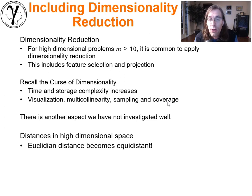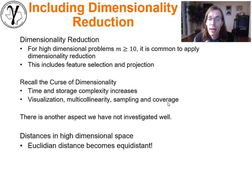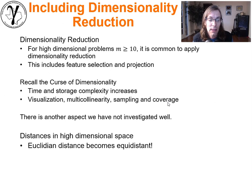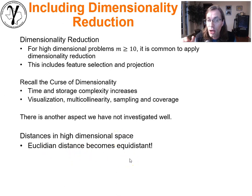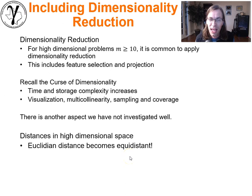There's another part of the curse of dimensionality that we haven't really investigated in this course until now. Distances in high-dimensional space are weird. Euclidean distances actually become equidistant — they are kind of insensitive and become the same in very high-dimensional space.